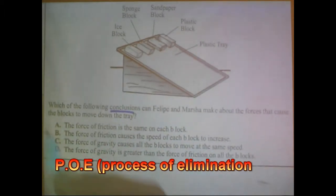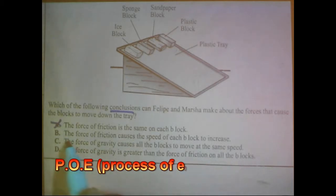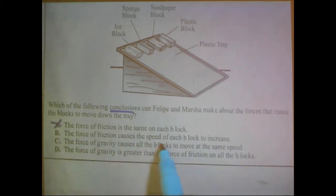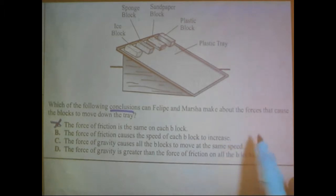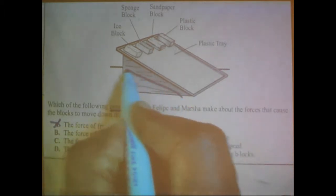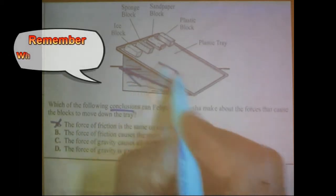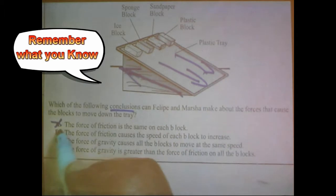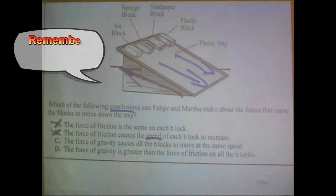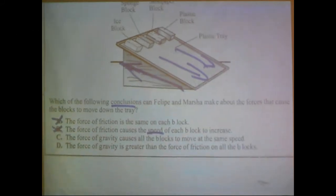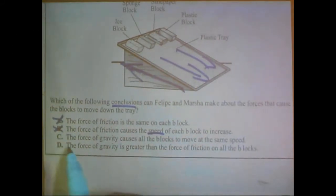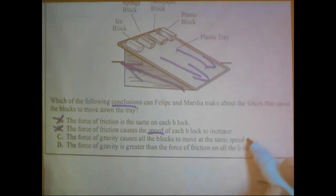The next one says, the force of friction causes the speed of each of the blocks to increase. Now, we know that friction is going to move us backwards. Not really backwards, but it's going to hinder us or prevent us from moving forwards. So we know that cannot be the answer because friction is an opposing force. It doesn't allow you to speed up. It doesn't permit you to speed up. It slows you down. Let's look at C. The force of gravity causes all the blocks to move at the same speed. Let's come back to that one.